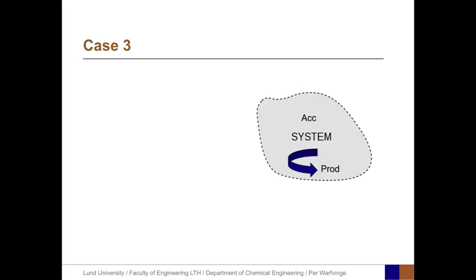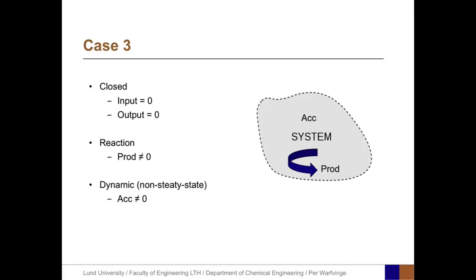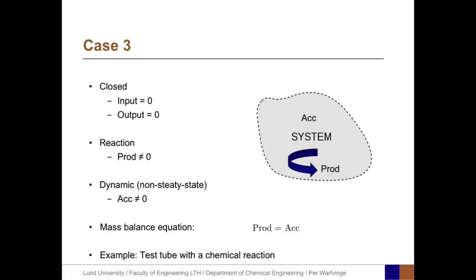A third case is a closed system — no inputs, no outputs — but with a production that differs from zero, and an accumulation that also differs from zero. This is a dynamic, non-steady-state system. The mass balance equation becomes: production equals accumulation. This means production and accumulation must have the same sign, because if production is positive, we must have an increase of the substance in the system. An example is a test tube with a chemical reaction — a closed container where we have a change in concentration, a change in amount within the test tube.